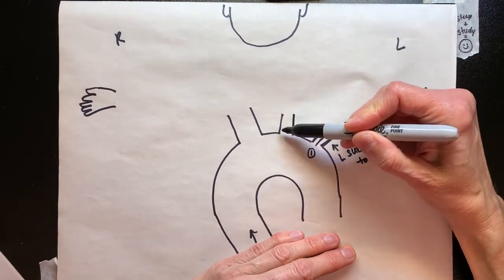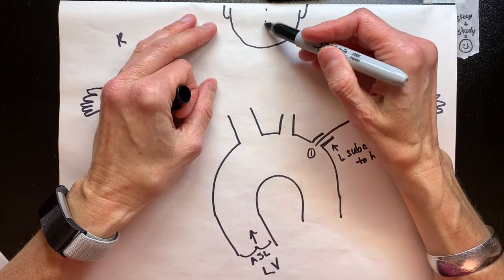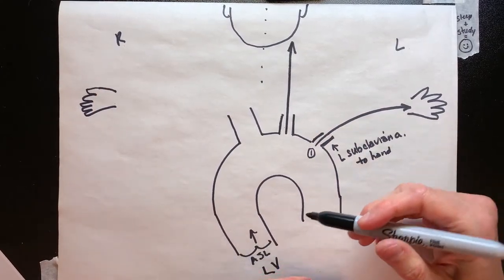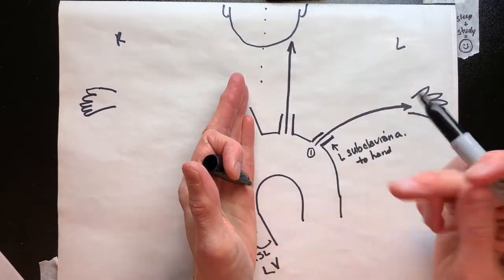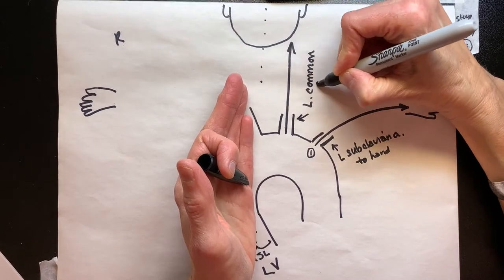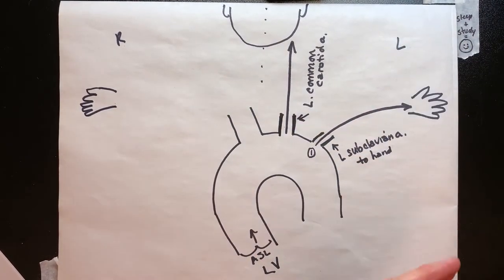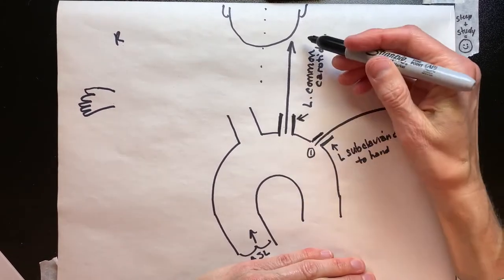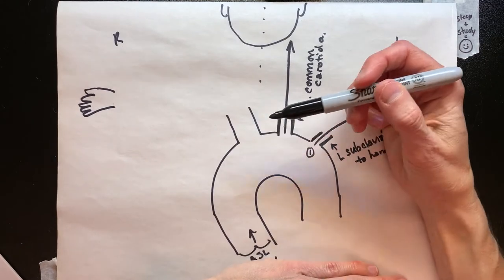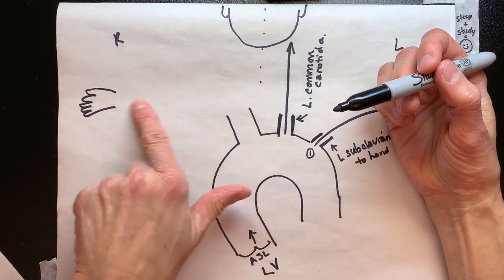The next branch off the aorta is pretty much right underneath the left cervical area, the left of the throat. Going straight up to the brain from the left side makes sense because the heart is already a little bit to the left. This is the left common carotid. I'm already on the left side because the heart is over to the left, so it's easy to go to the left arm and then go to the left side of the brain through the carotid and all its branches.